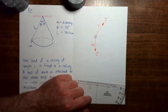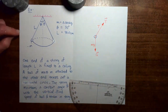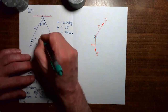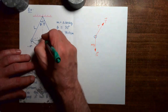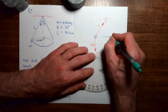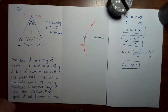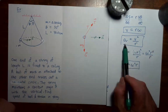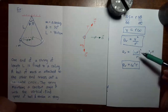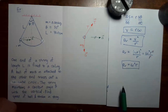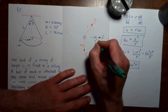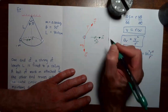Now we want to put in the acceleration vector. An object moving in a circle at constant speed has an acceleration vector pointing towards the center of the circle. So at the moment where the mass is at the leftmost point, the acceleration vector points to the right. We saw in an earlier video that this acceleration can be expressed as v squared over the radius, or as angular velocity squared times radius. For this problem I'll use the formula involving the speed, so the magnitude is v squared over r.